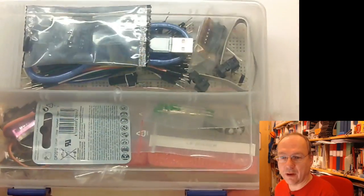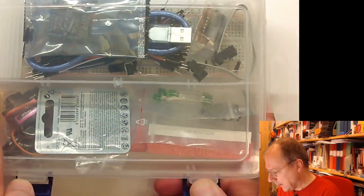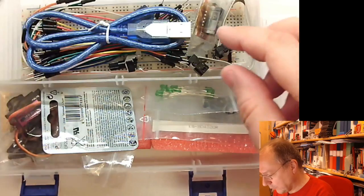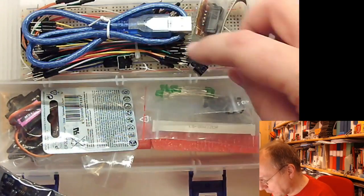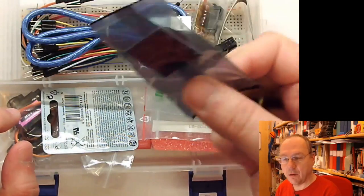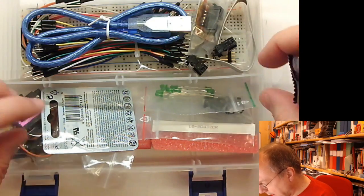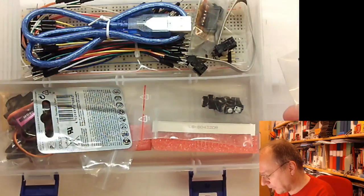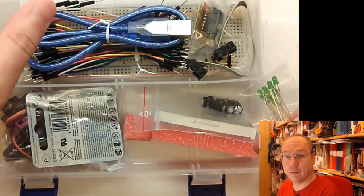So this is a box as it arrived from electro kit and what we have in here is cables, breadboard down there, a potentiometer, a real-time clock chip and a small bag with green LEDs and some other things which will be listed on Studium later on as well.